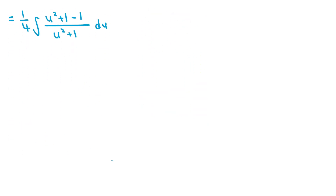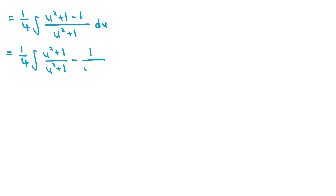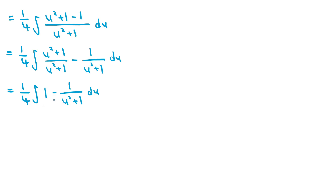All I've done is added 1 and then subtracted 1 from the numerator, so this is still the same expression. If we split the fraction, we can rewrite the integrand as u squared plus 1 over u squared plus 1, minus 1 over u squared plus 1. Since u squared plus 1 over u squared plus 1 is just equal to 1, the integrand becomes 1 minus 1 over u squared plus 1. The integral of 1 is u, and the integral of negative 1 over u squared plus 1 is negative arctan of u, which is a standard integral.